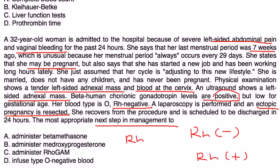She needs to be given something that can neutralize the Rh positive red blood cells from the fetus, and that's done with a medication known as RhoGAM. That would be choice C.